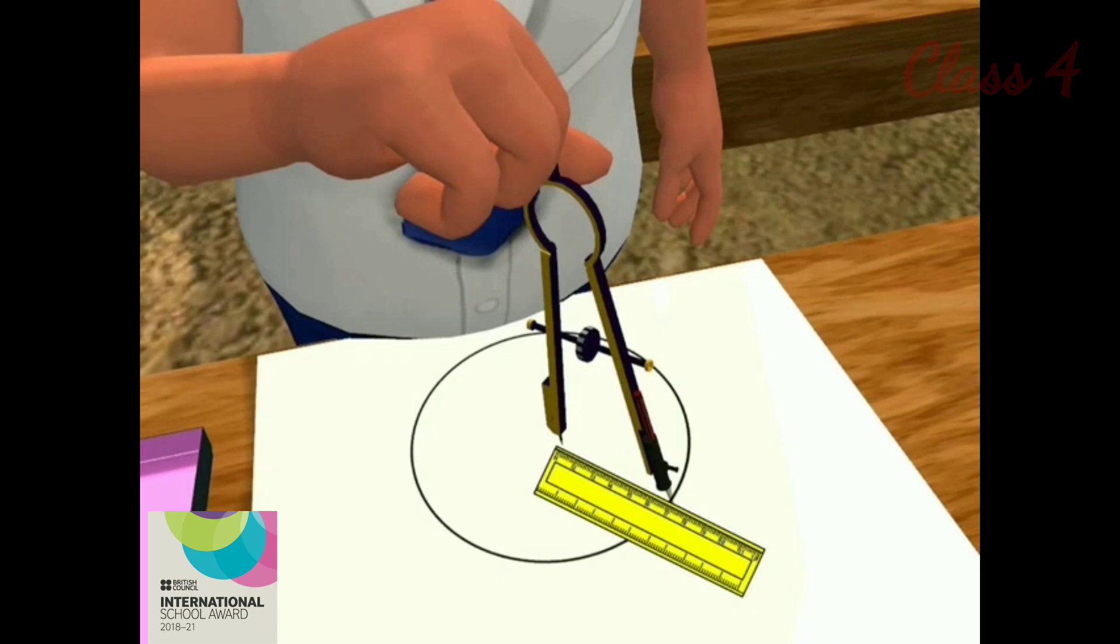Now you can also use a ruler to figure out the radius of the drawn circle. You will find it is equal to 6 cm.